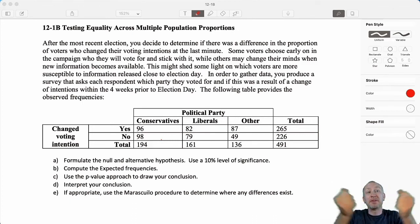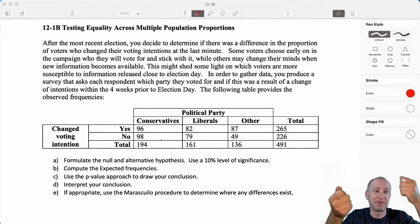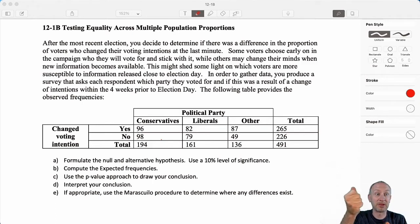And if the difference between what we observe and what we expect to observe is very large, well then that tells us that what we expected, because that expectation is based on the null being true, if that difference is very large, well then that tells us that maybe the null is not true because what we observed is very different from what we might have expected. If that difference is very small and what we observe is very similar to what we would expect if the null is true, well then that supports the null.